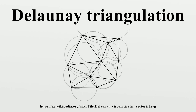The Delaunay triangulation of a discrete point set P in general position corresponds to the dual graph of the Voronoi diagram for P. Special cases include the existence of three points on a line and four points on a circle. Connecting the centers of the circumcircles produces the Voronoi diagram.